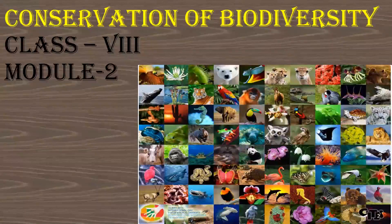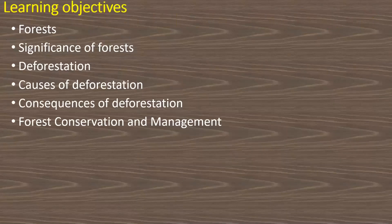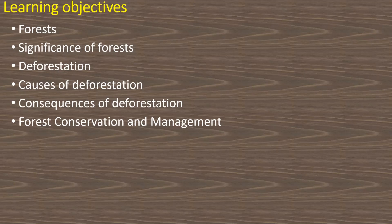Good morning students! Welcome to online classes of RPS Group of Schools. Here we will study Module 2, which is a continued part of the chapter conservation of biodiversity. In this module, the learning objectives are: forests, the various significance of forests, what we mean by deforestation, the various causes of deforestation, the consequences of deforestation, and lastly forest conservation and management.